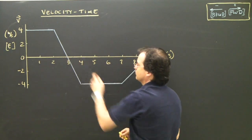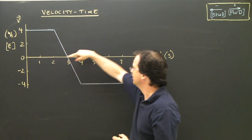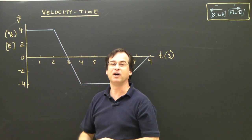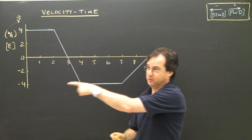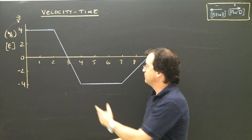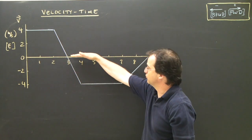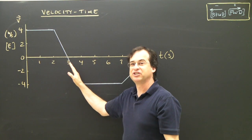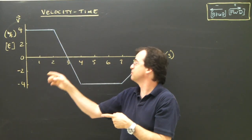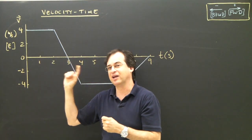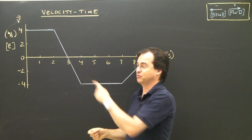Between three and four seconds, at three seconds I'm going zero meters per second — not moving. At four seconds I'm going at minus four meters per second, so I'm now running in the negative direction at four meters per second, which is west. The slope is still negative here even though it's below the axis, so the acceleration is negative. I'm running that way and accelerating that way, which means I'm speeding up in that direction — going faster backwards.